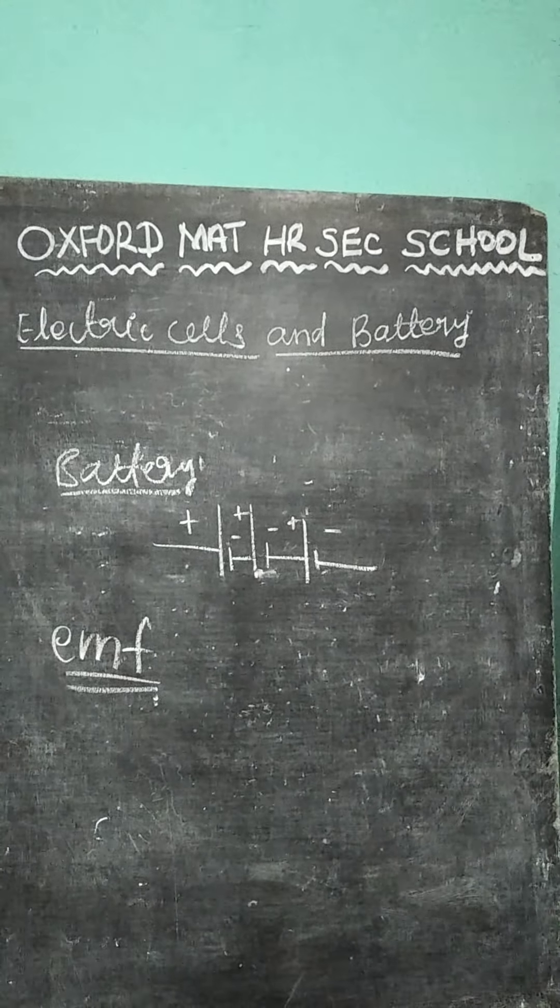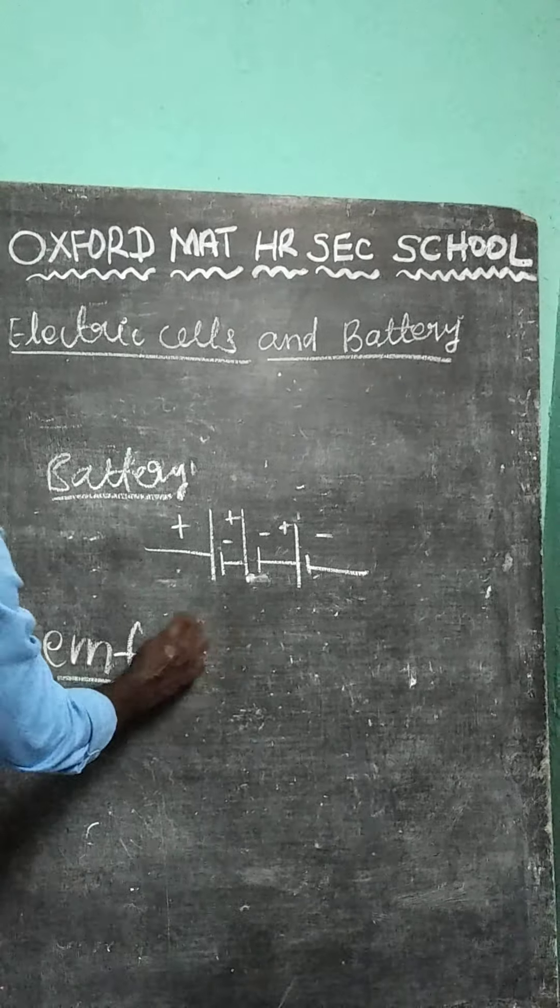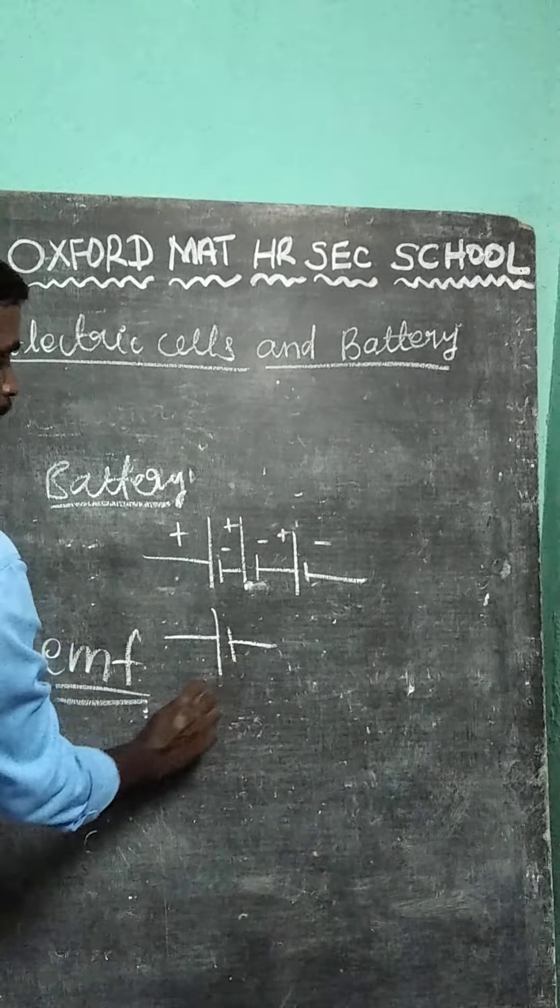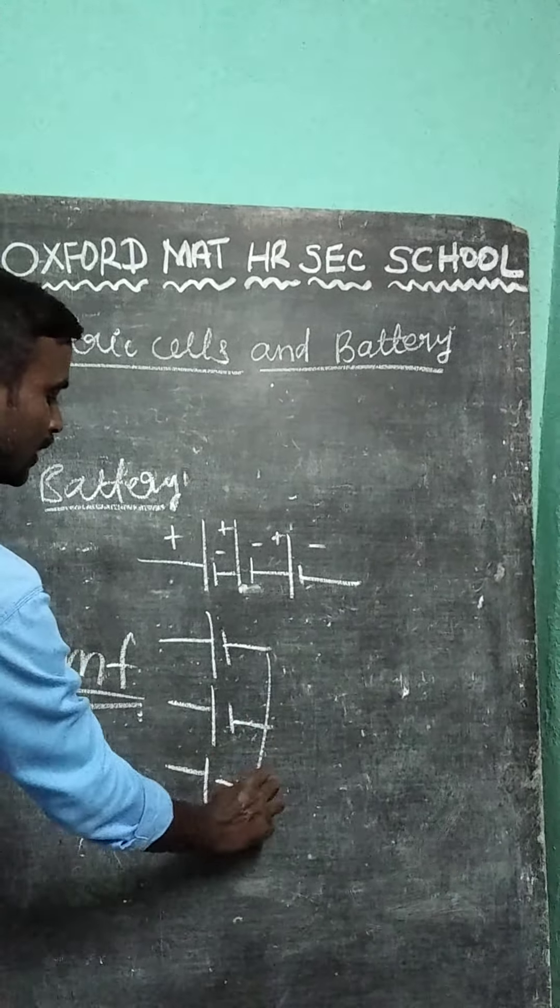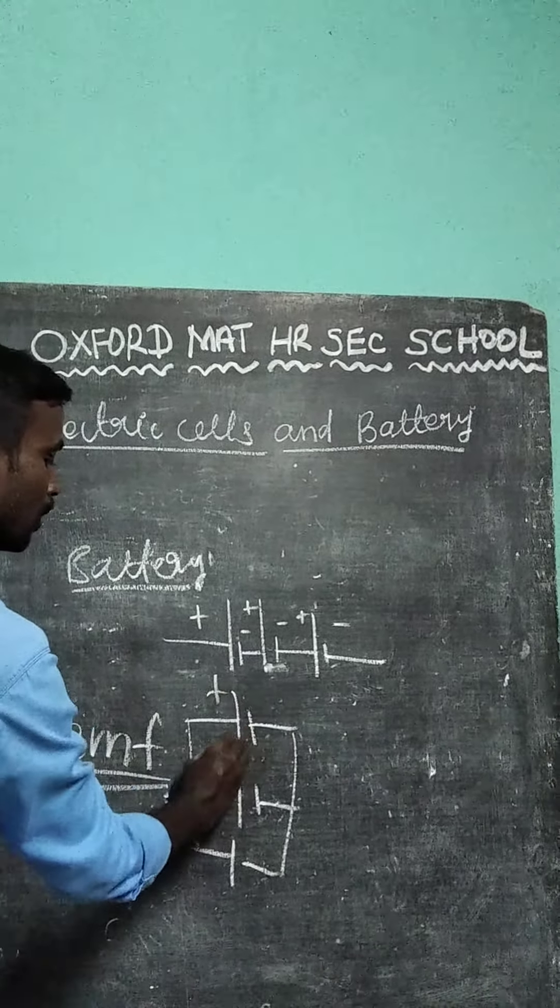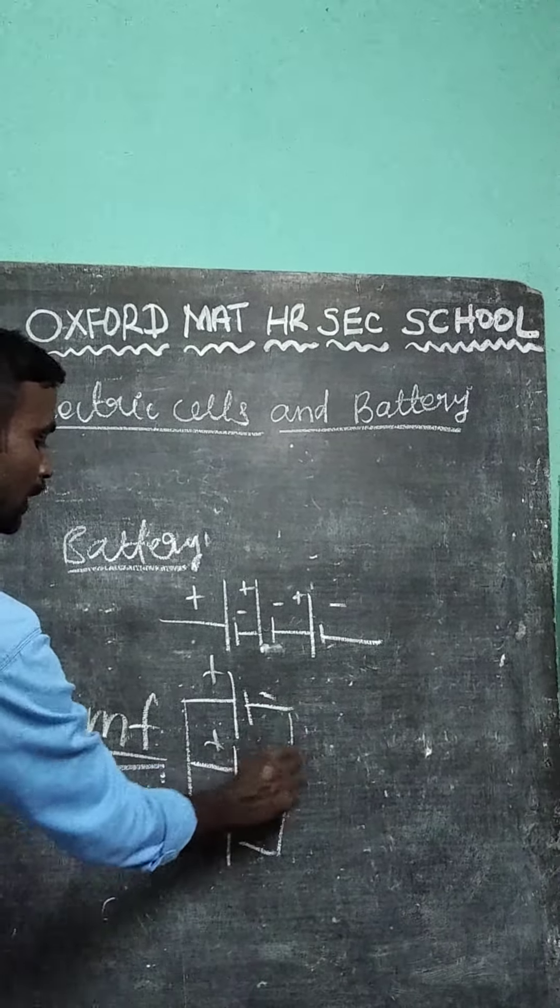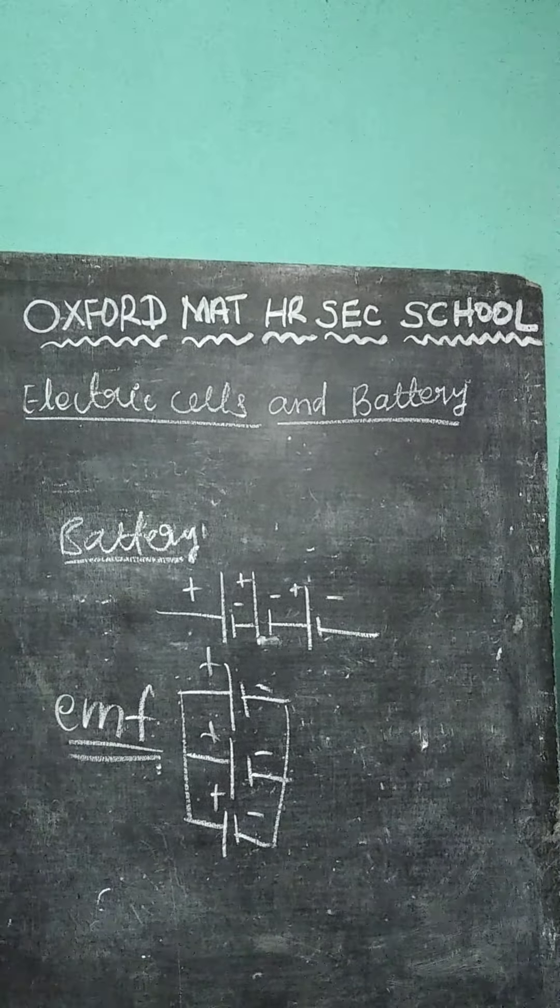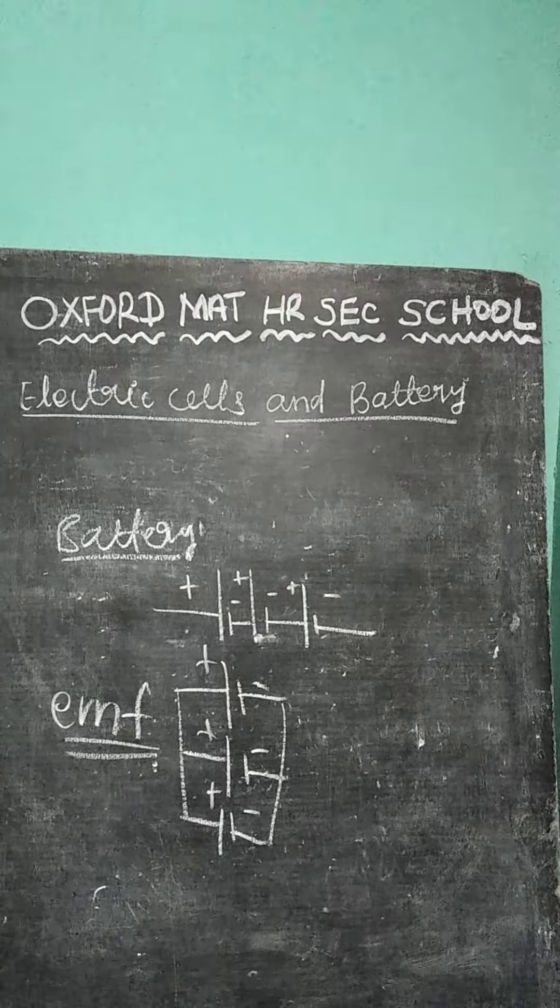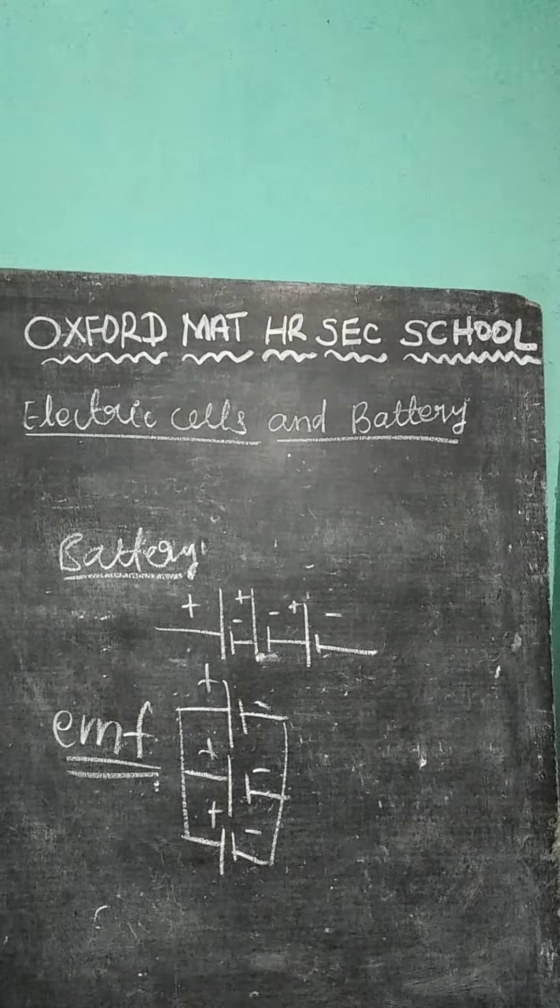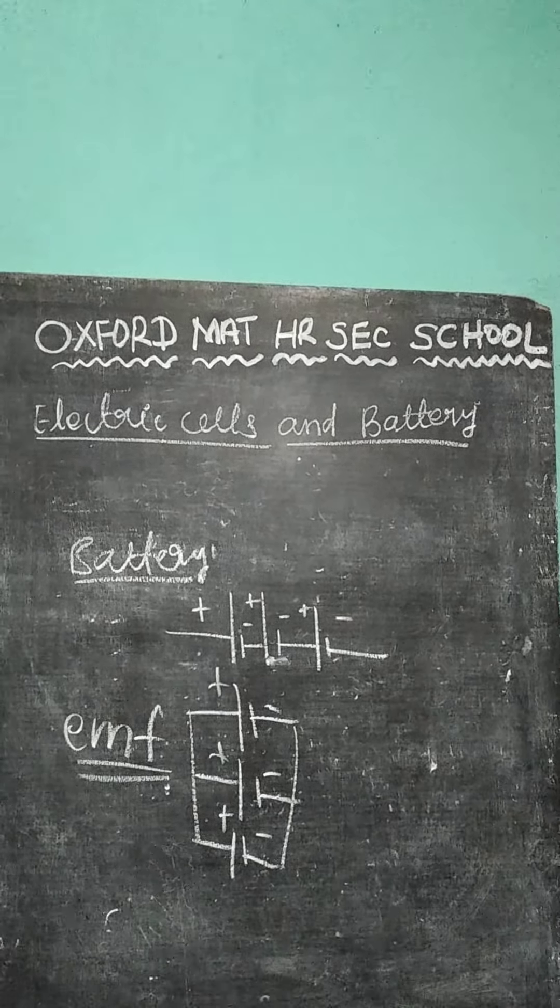Then, parallel connection means all the batteries positive connected in one terminal. Then, negative connected in one terminal. This is called a parallel connection. So, two or more cells connected in series or parallel. This is called as a battery.